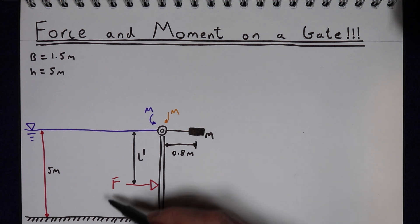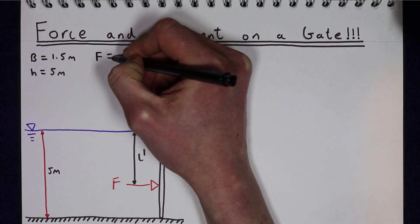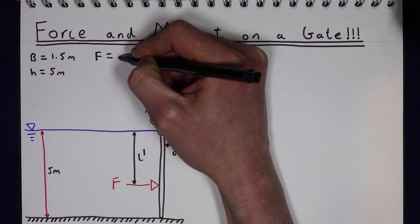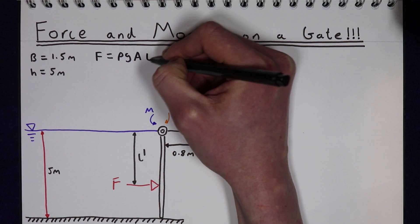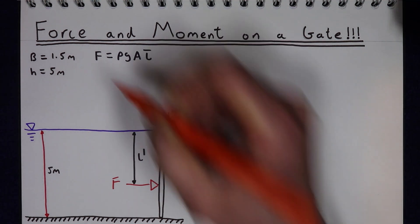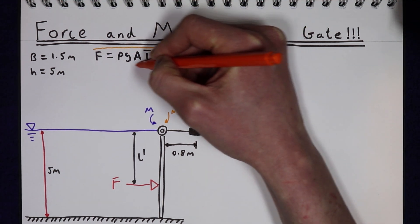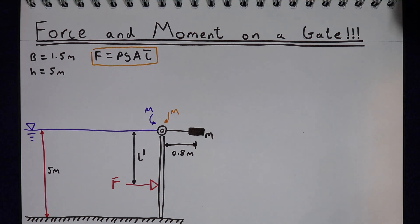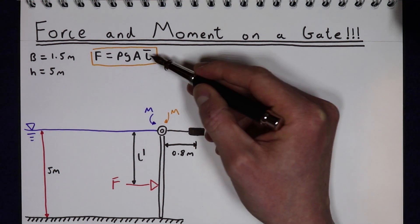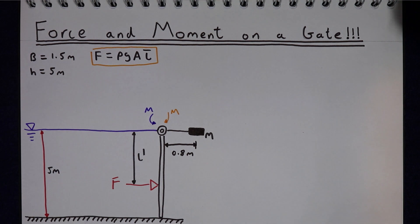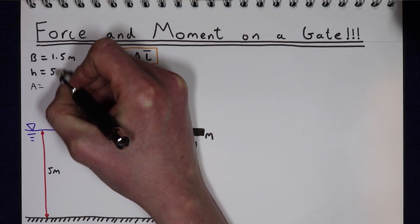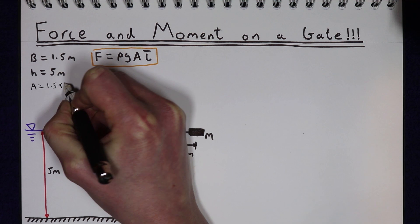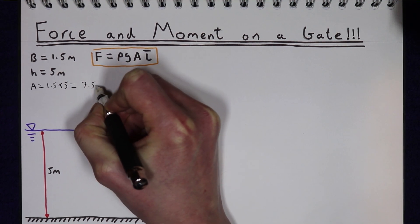The first step is to work out this force F. The total force from a body of water on a surface is the density of water times gravity times the area of the surface times the centroid of the surface. There are two unknowns in this equation: the area and the centroid, but we can work them out easily. The area is going to be the width of the gate times by the height of the gate, so 1.5 times 5, which gives us an area of 7.5 metres squared.